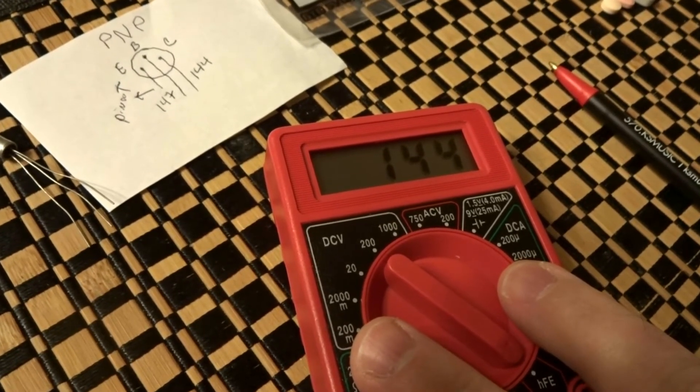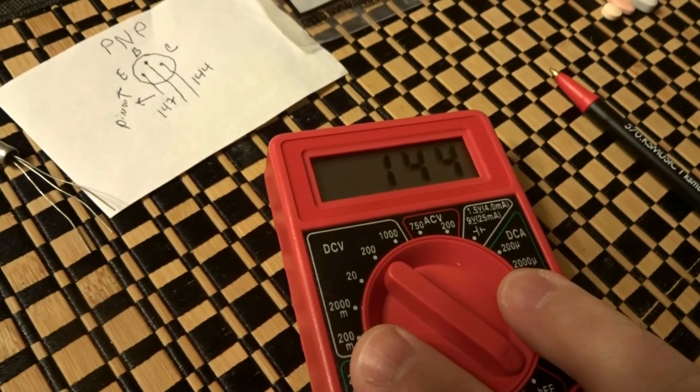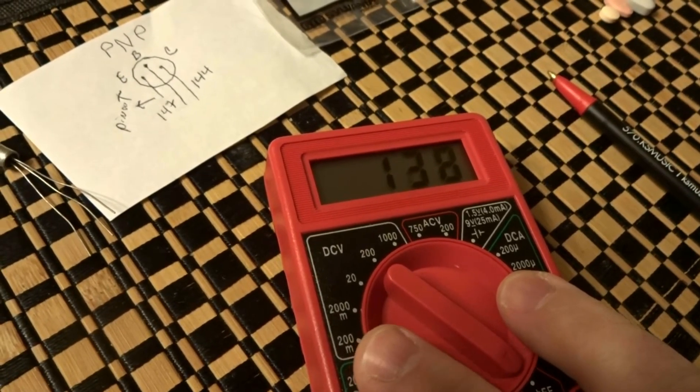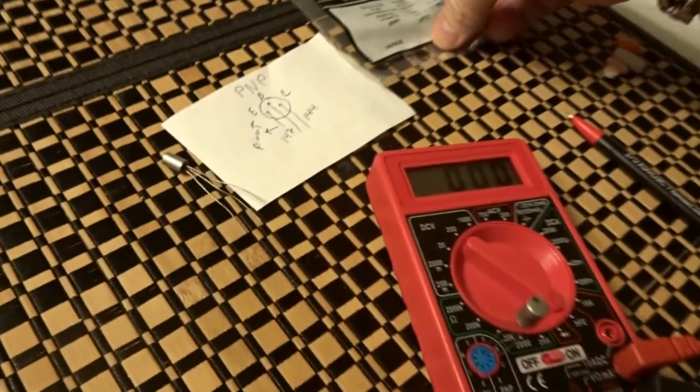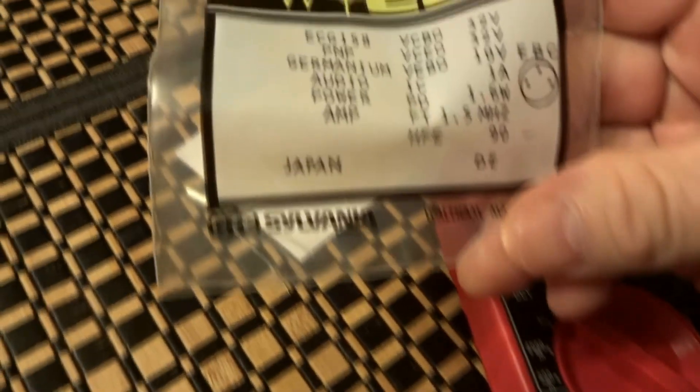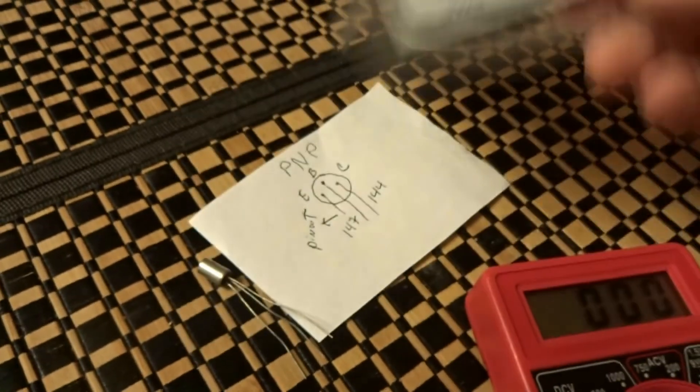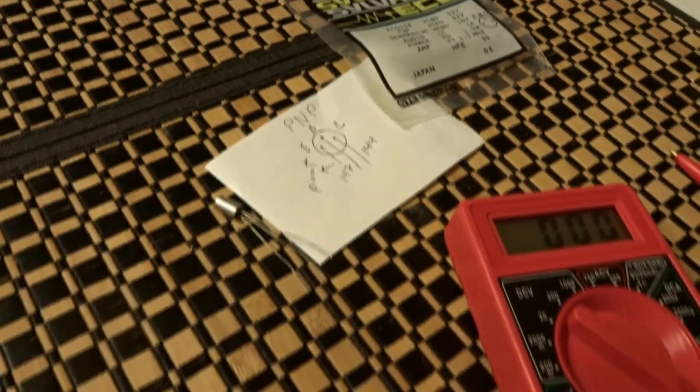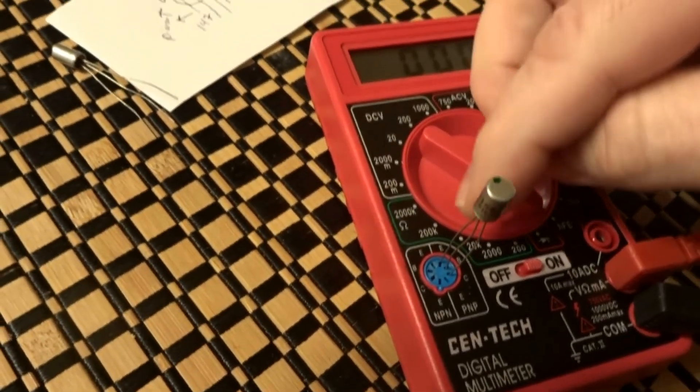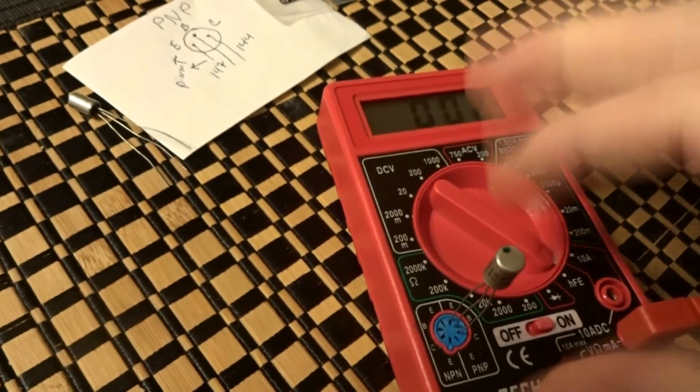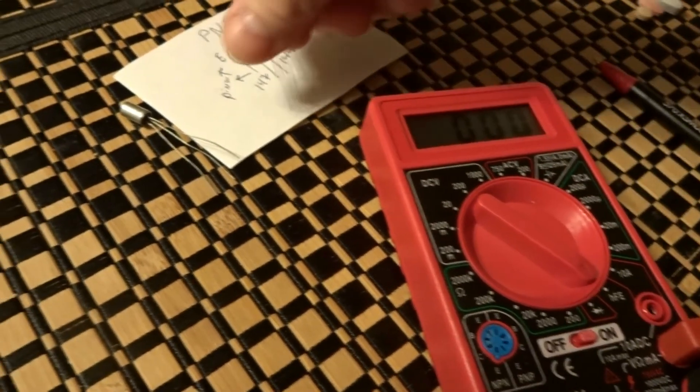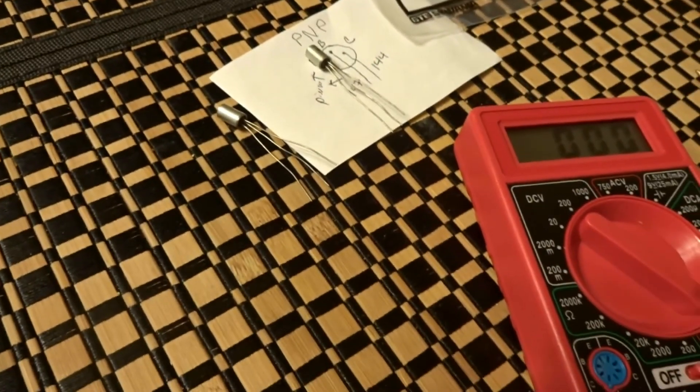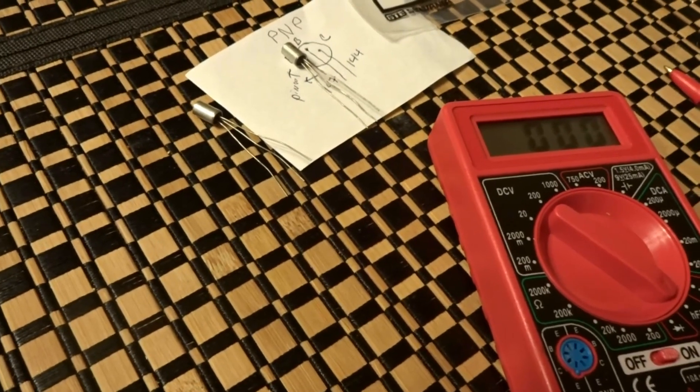You can see the HFE is 144 on this, and up here on the package it says 90. So we definitely know that the green dot represents the emitter because we got that out. And that's exactly how you want to be sure to test your transistors out.